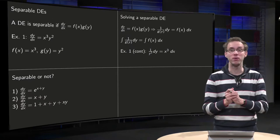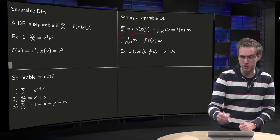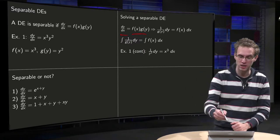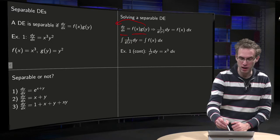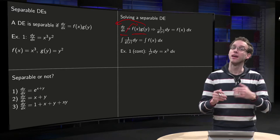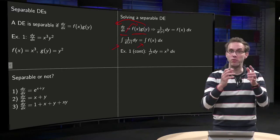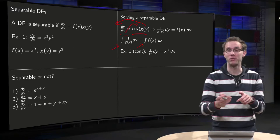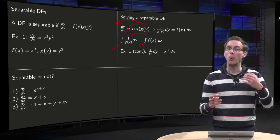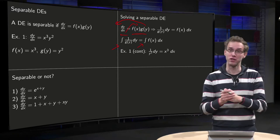We now know what a separable differential equation is, but how do we solve them? We use the following trick. We have dy/dx equals f(x) times g(y). Then we put all y's on the left-hand side and all x's on the right-hand side — we divide by g(y) and multiply by dx — giving us (1/g(y)) dy = f(x) dx. The second step is to add an integral sign: we integrate 1/g(y) with respect to y on the left, and f(x) with respect to x on the right, at least if we can find the antiderivatives.